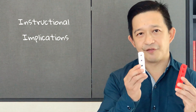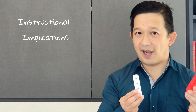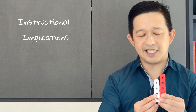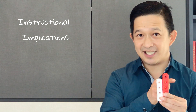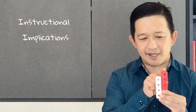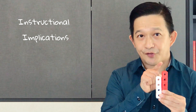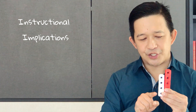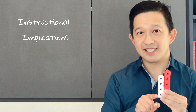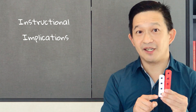Likewise, if this was the original amount and this is the final amount, students can see that there has been an increase. The increase is this amount, and this amount is a certain fraction — a certain percent of the original amount. It is 25% of the original amount.